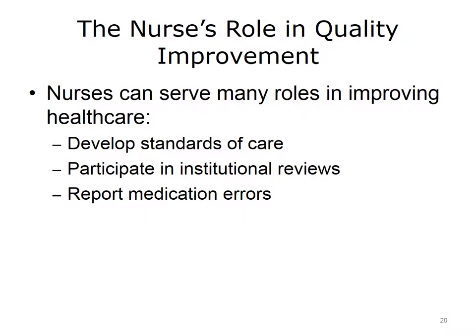Because most nurses interact often with patients, they often have experience and insights that can enable them to help improve the quality of health care. Nurses can develop standards of care for institutions or help measure the quality of care that patients receive. For example, nurses might help an institution review patient charts, interview patients about their care, and observe interactions between health care providers and patients. Many institutional accrediting and licensing agencies also look at the rate of medication errors when rating an institution. Researchers have found that medication errors are often caused by poor systems and poor communication within hospitals. By reporting medication errors, nurses can help remedy such problems and protect patients.